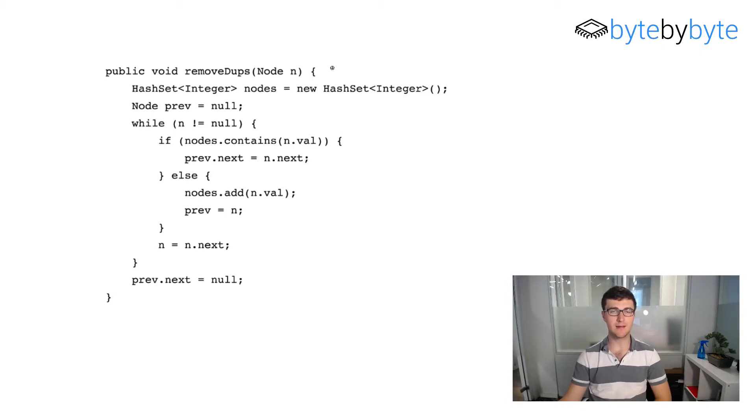So we take in a linked list and we create a hash set and then what we're going to do is we're going to have some previous node here and then while n is not null, so n was the original list, while n is not null we're going to check whether our hash set contains the value and if it contains the value then we're going to see that the previous node now points to the next node. So we're basically skipping the current node if it's a duplicate and otherwise we're adding our value to the list and then we increment n.